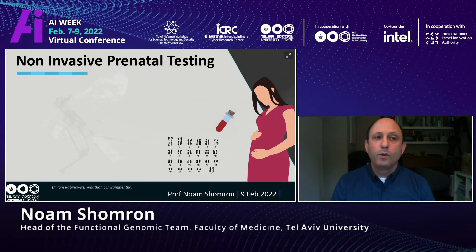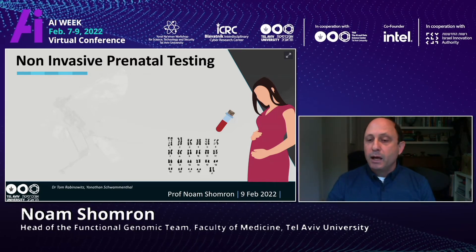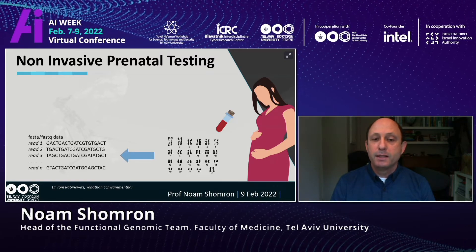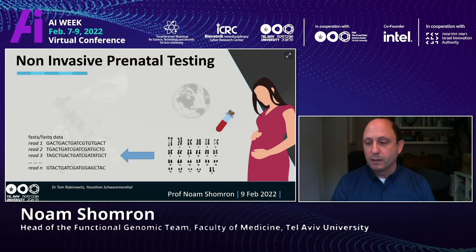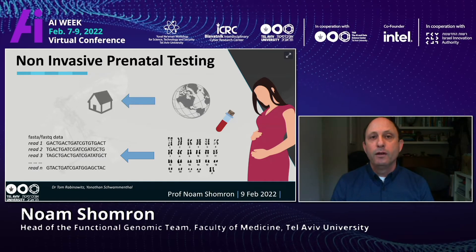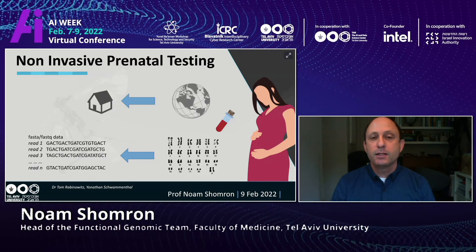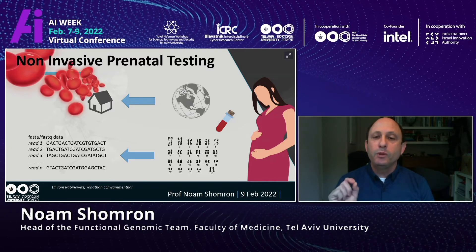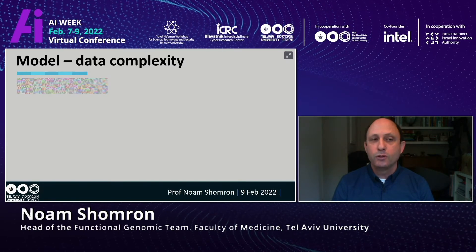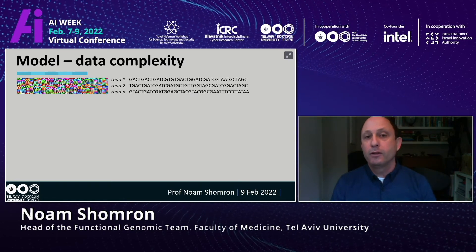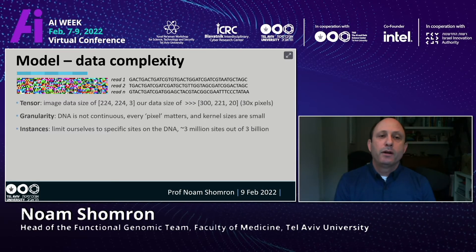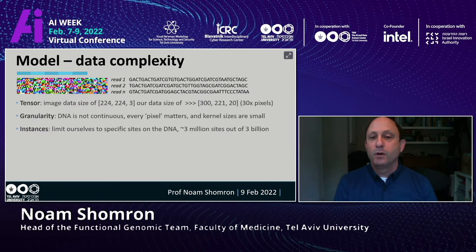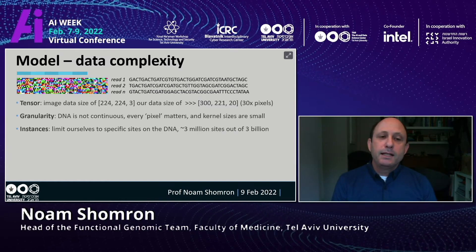Another study in the lab is on non-invasive prenatal testing. A blood sample is taken from a pregnant woman to identify whether there are specific changes at chromosomal levels. But looking at chromosomes is like looking at planet Earth from outside and trying to identify an additional continent. What we want to do is enter a continent, a city, a street, a house — and identify point mutations. Just to show you the complexity, let's compare genomic analysis versus image analysis across tensor, granularity, and instances.